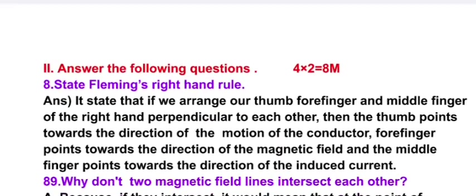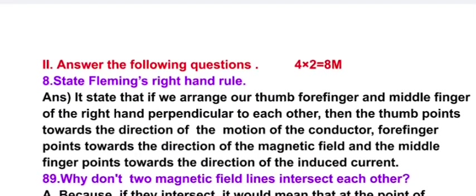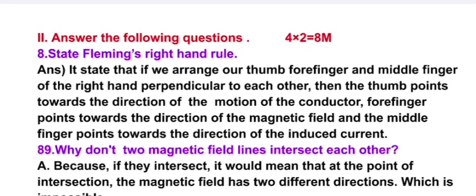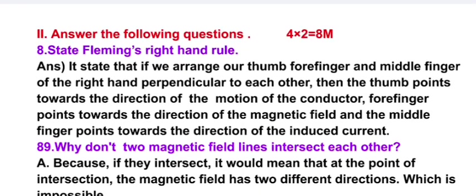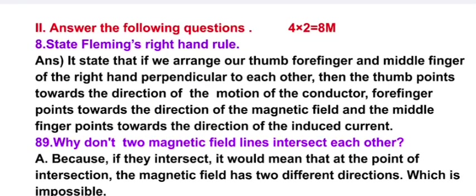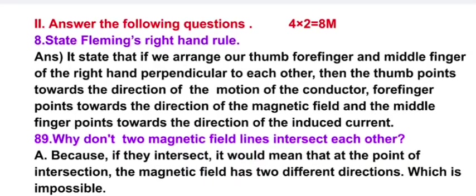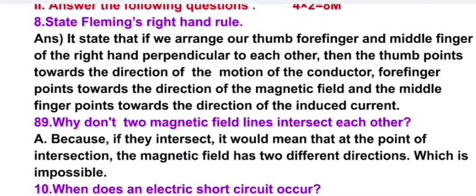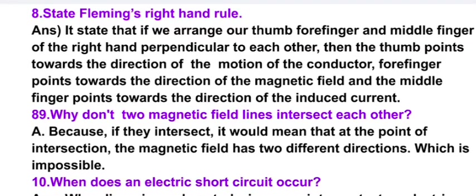Answer the following questions: 4 into 2 equals 8 marks. State Fleming's right hand rule. It states that if we arrange our thumb, forefinger, and middle finger of the right hand perpendicular to each other, then the thumb points towards the direction of the motion of the conductor, forefinger points towards the direction of the magnetic field, and the middle finger points towards the direction of the induced current.